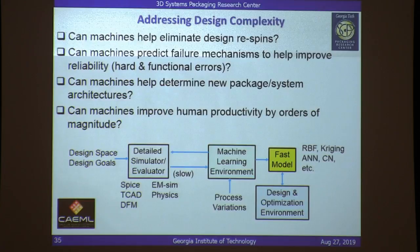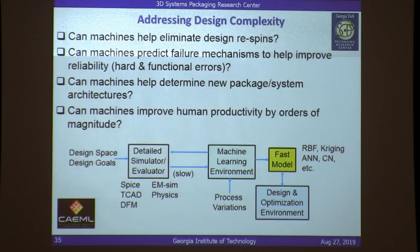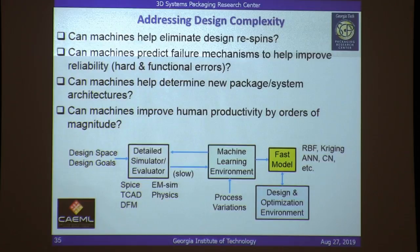With the remaining time, let me get into the last topic. As we build these systems, the complexity is increasing many-fold — to a point where it's becoming impossible to actually design them. The question is: can machines help design these systems? There are design re-spins from mistakes, which is a terrible way of doing things. Can machines help improve reliability by predicting hard and functional errors at the design phase? Can machines help determine new package and system architectures?